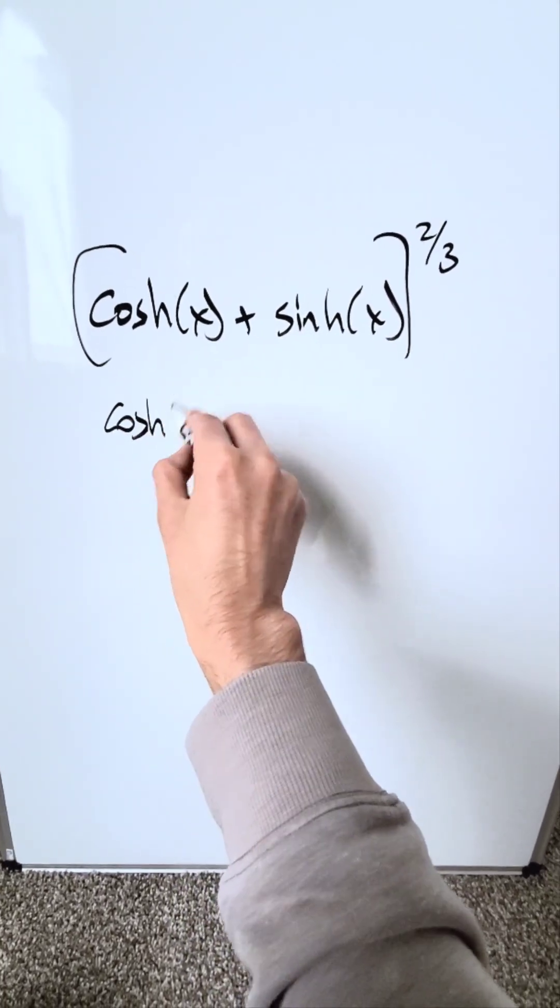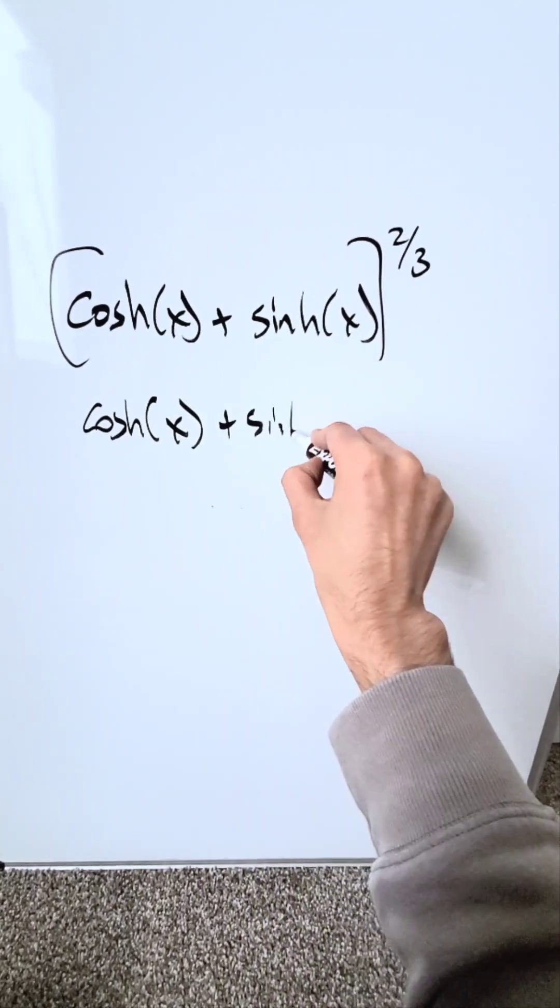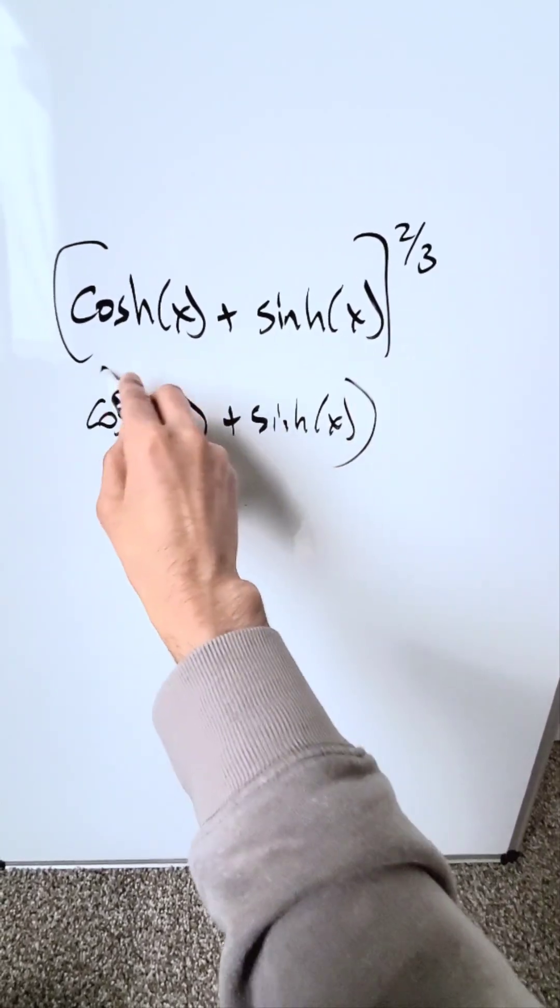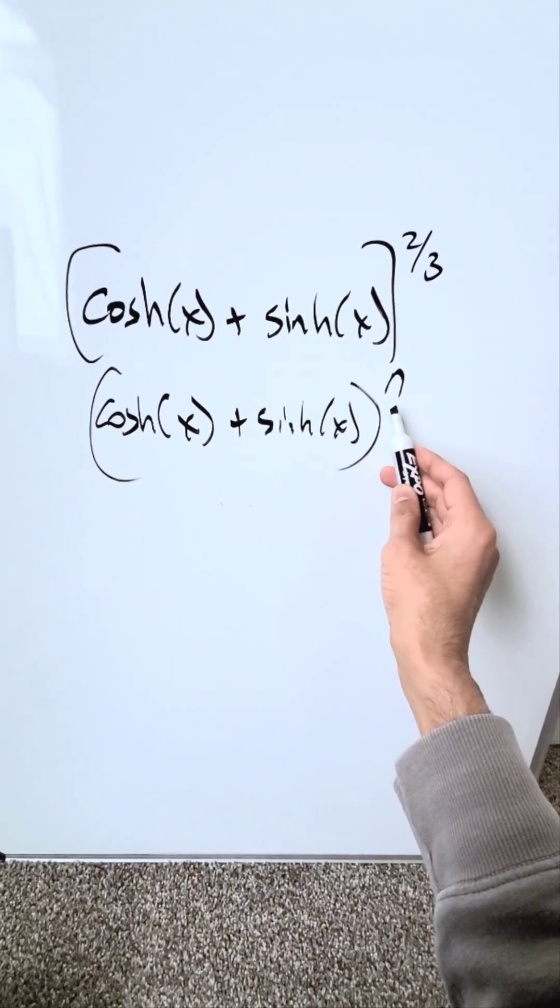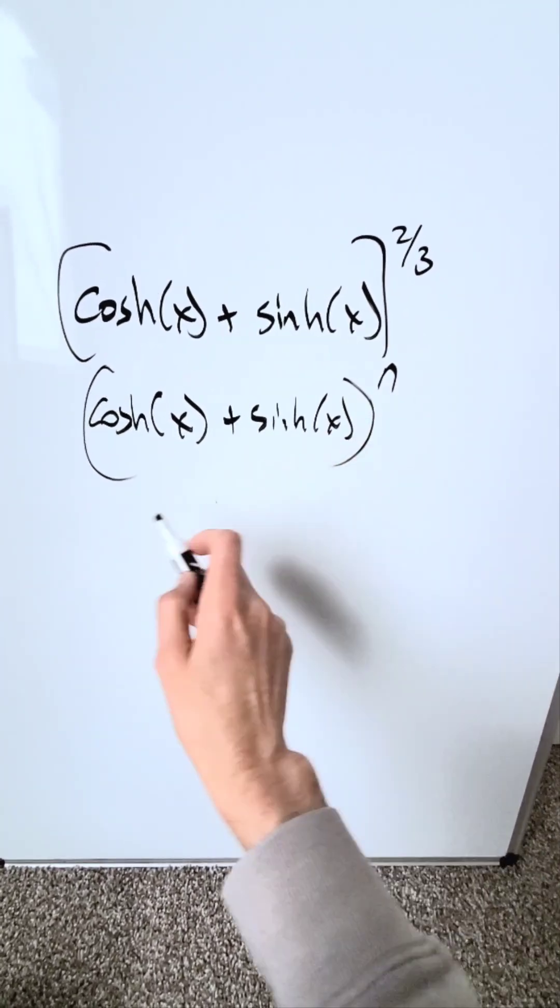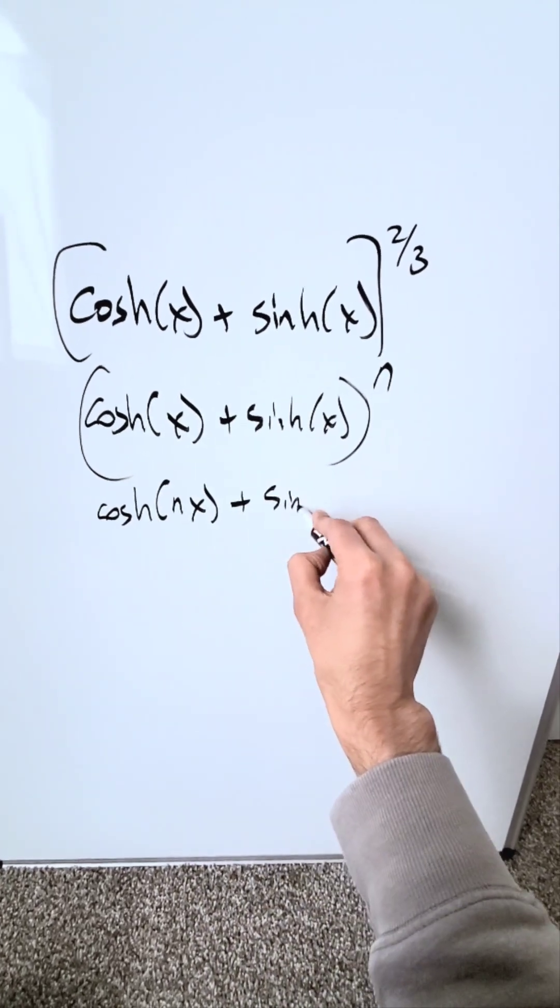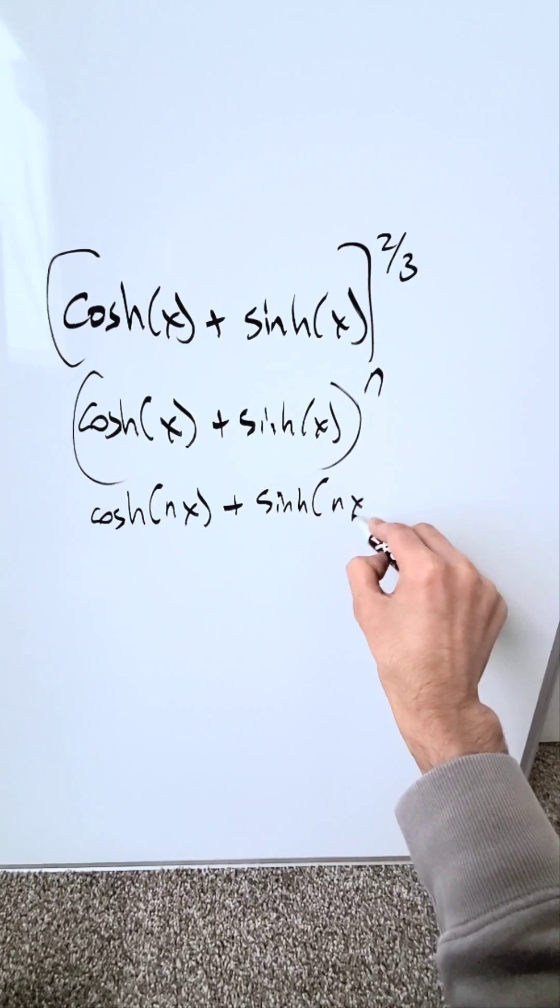You have an identity which you can use to your aid. You have hyperbolic cosine x plus hyperbolic sine x to the power of a specific value n. You're not going to expand this using binomial expansion. You'll use that identity which is equal to hyperbolic cosine of nx plus hyperbolic sine of nx.